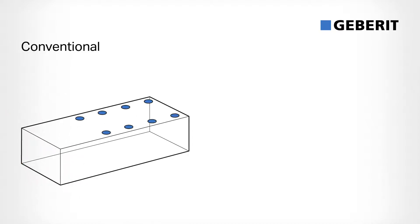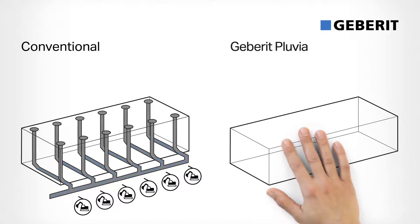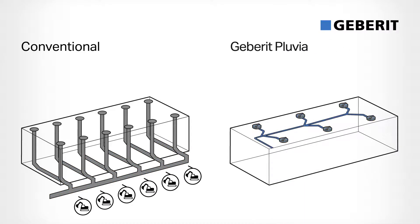Conventional drainage systems require several roof outlets and discharge stacks, plus a complex network of underground pipes. The Geberit Pluvia system, however, requires far fewer roof outlets and has smaller pipe dimensions, fewer pipes, fewer discharge stacks and fewer connections to the sewage system.